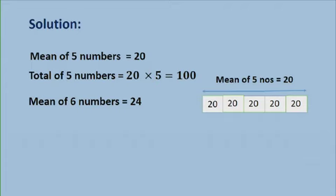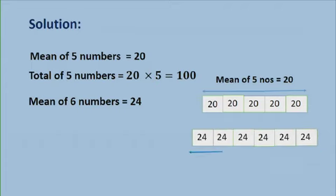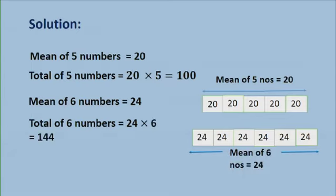Now mean of six numbers is given as 24. So the mean of six numbers now is 24. So the total will be 24 times 6, that is 144. The total of five numbers will be 100, and the total of six numbers is 144. So what do you think will be the sixth number? Yes, the sixth number will be 144 minus 100, that is 44.